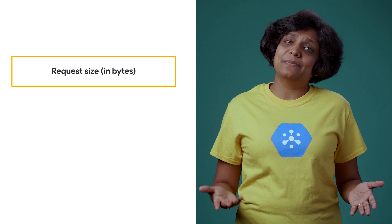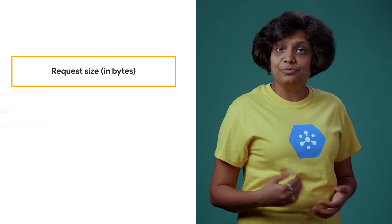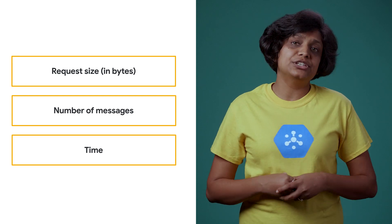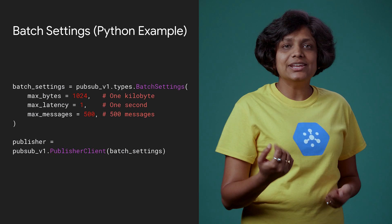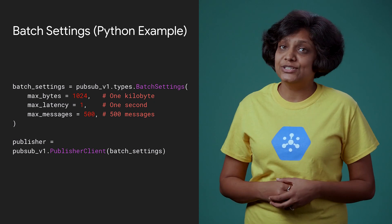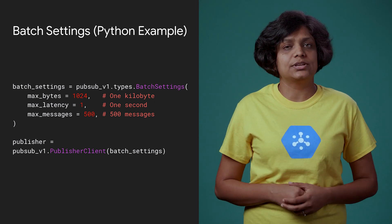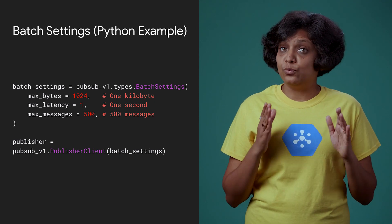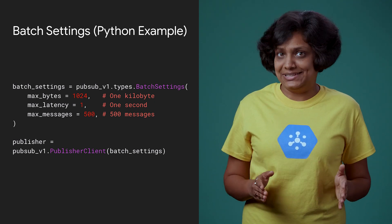Messages can be batched based on request size in bytes, number of messages, and time. You can override the default settings by defining your own. Here's an example code in Python where we are defining batch settings for maximum bytes, latency, and messages. A caveat here is that once you override one setting, you should override them all explicitly.